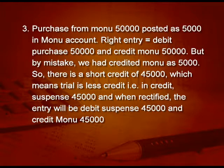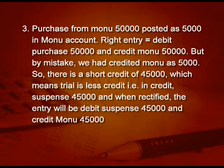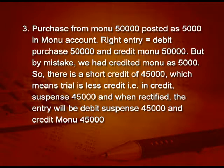We have to analyze entry wise. Next example: purchase from MONU 50000 posted as 5000 in MONU account. The right entry is debit purchase 50000, credit MONU 50000. But by mistake, we credited MONU as 5000 only — purchase is okay. So MONU account is less credit by 45000, meaning the trial will be less in credit. Suspense 45000 is in credit in the trial balance. When we rectify, we debit suspense 45000 and credit MONU 45000.